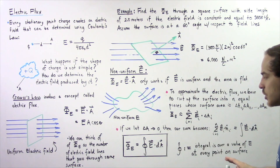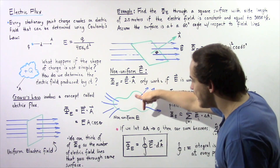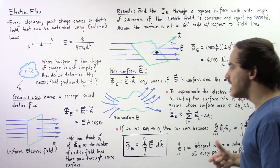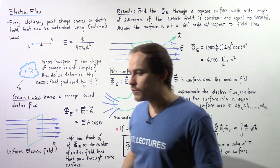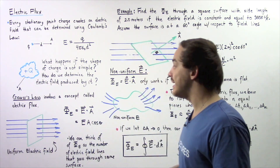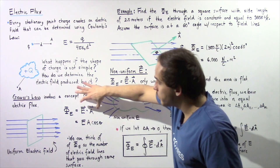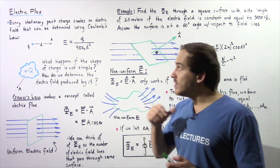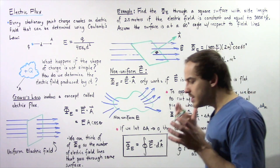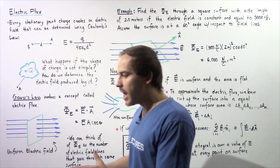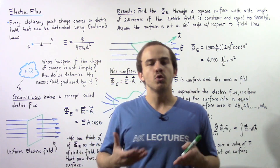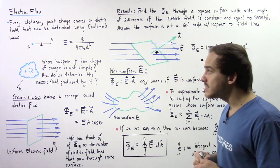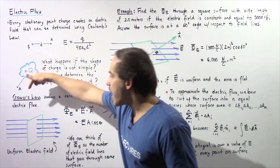This equation assumes that our electric field E is not uniform and the surface A is not flat. If the electric field is uniform and our surface is flat, then we simply use the simpler equation. Electric flux is simply the number of electric field lines that pass through some given surface, and we are going to use this concept when we discuss Gauss's law.